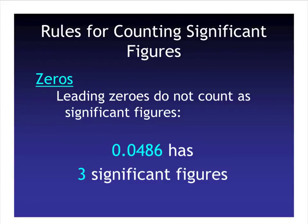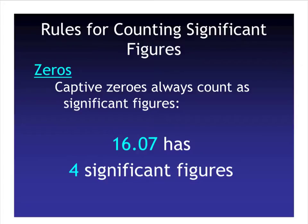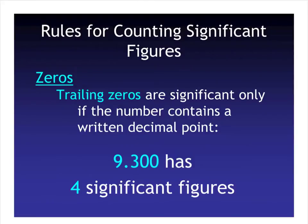Captive zeros always count as significant figures — zeros that are sandwiched in between non-zeros. So a zero between a 6 and a 7 is significant, giving four significant figures in that case. Trailing zeros — zeros at the very end — are significant only if the number contains a written decimal point. If the decimal point is not literally written in the number, you cannot count those trailing zeros. So trailing zeros only count if you can actually see the decimal point on your paper.